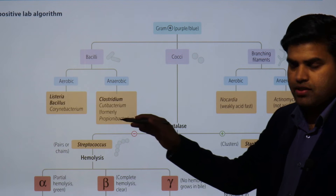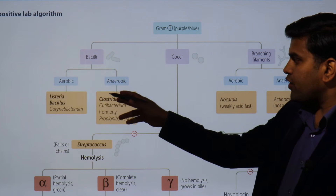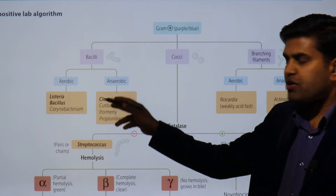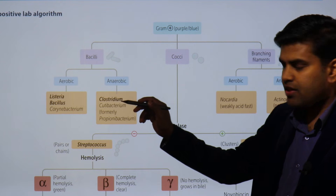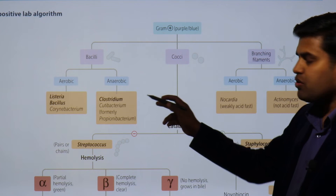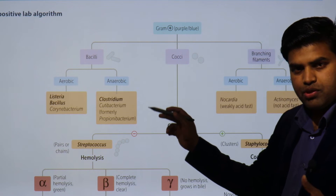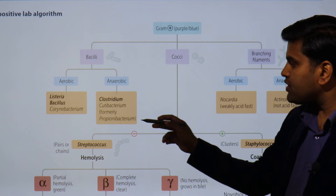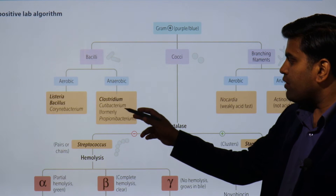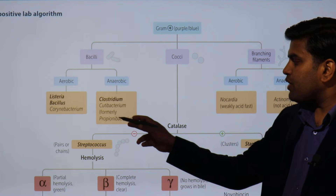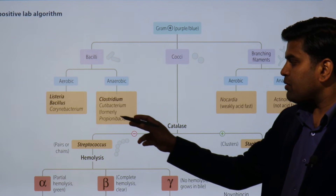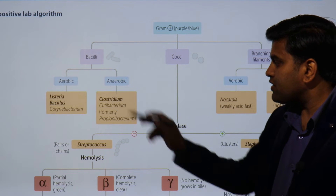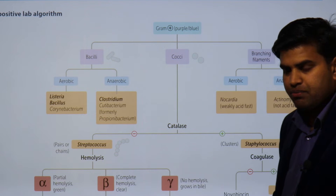Few are the bacilli. Bacilli are divided into aerobic and anaerobic. The aerobic include Listeria, Corynebacterium diphtheriae, and anthrax. The anaerobic are the Clostridium group of organisms causing Clostridium tetani, Porphyromonas, botulinum, and there is formerly known as Propionibacterium acnes that was recently renamed as the Cutibacterium acnes.